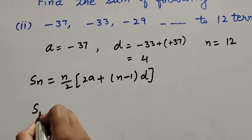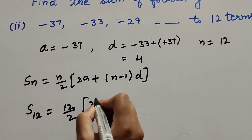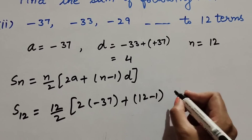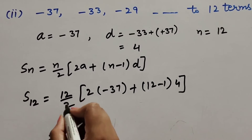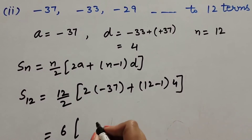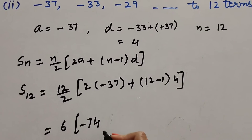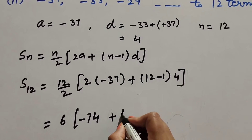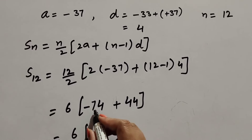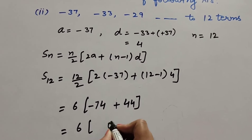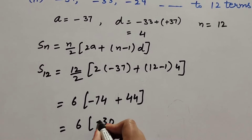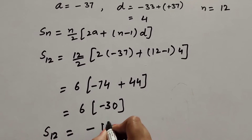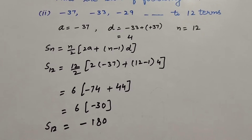With n = 12: S₁₂ = 12/2 × (2×(−37) + (12−1)×4) = 6 × (−74 + 11×4) = 6 × (−74 + 44) = 6 × (−30) = −180. So the sum of 12 terms of the AP is equal to −180.